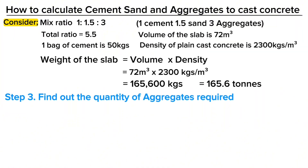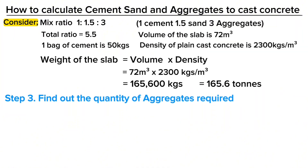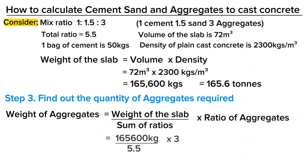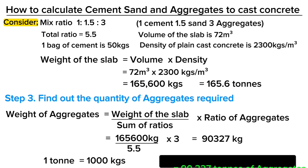The third step is to find out the quantity of aggregates required. The weight of aggregates required is equal to the weight of the slab, divided by the total ratio, multiplied by the ratio of aggregates. When we feed in the required figures, we get the weight of aggregates as 90,327 kilograms, which is the same as 90.327 tons.